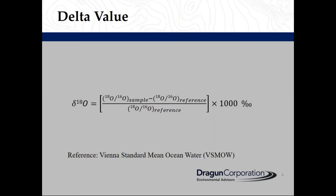In order to ensure the isotope ratios measured at different laboratories are comparable and accurate, the ratios are expressed relative to an international reference. For example, Vienna Standard Mean Ocean Water for oxygen. The measured values are reported as delta values. Since the delta values are very small, they are multiplied by 1,000 and reported as parts per thousand or per mil.